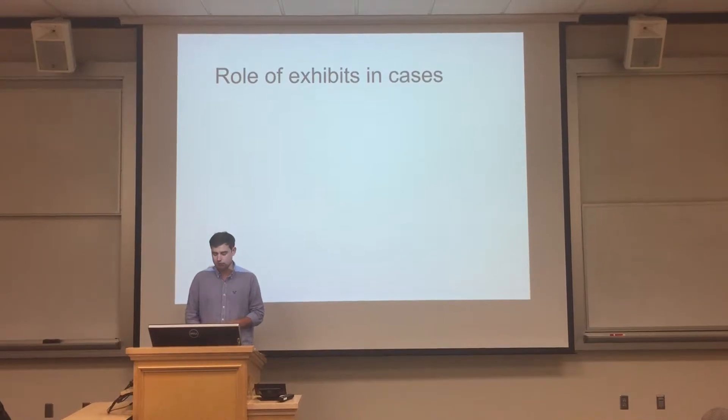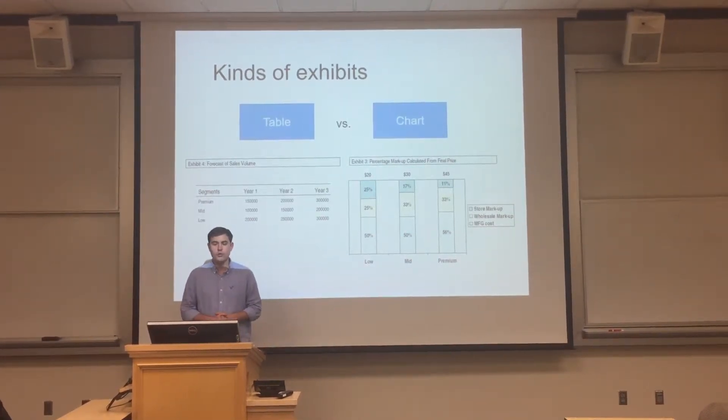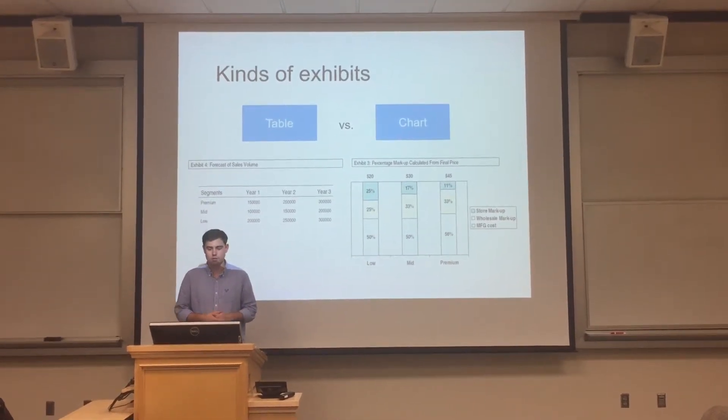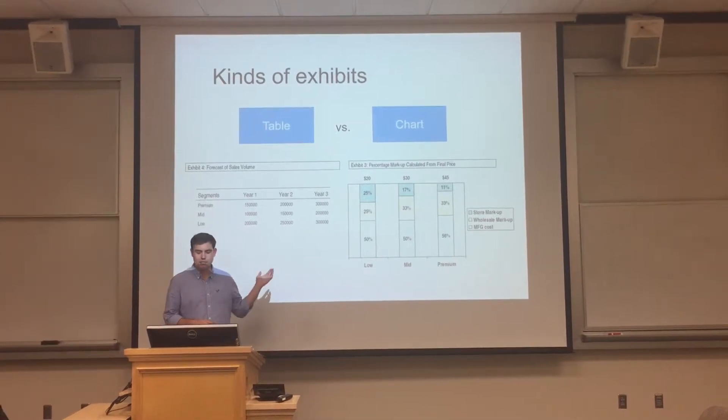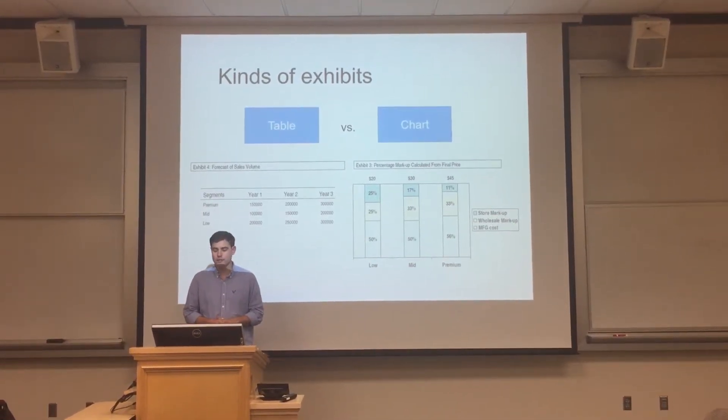When it comes to exhibits, there are lots of different types. The first key difference in the types of exhibits is between tables and charts. Tables are simply tables of data or information, whereas charts are visualized data.